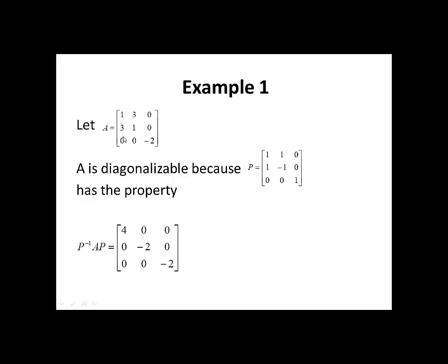Example 1. Let A be the matrix with entries 1, 3, 0, 3, 1, 0, 0, 0, negative 2. Then A is diagonalizable because there is an invertible matrix P with entries 1, 1, 0, 1, negative 1, 0, 0, 0, 1 such that P inverse times A times P gives a diagonal matrix. The big goal of this lecture is to find matrix P such that P is invertible and P inverse times A times P is a diagonal matrix.